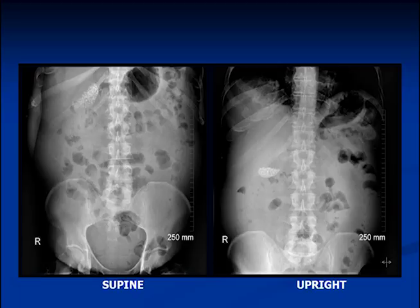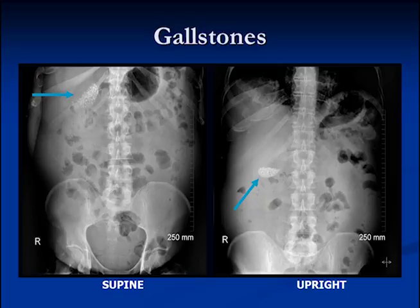There's some calcification in the right upper quadrant on this film — these are gallstones. If we do an upright view, you can see that the stones layer out — they're a little heavier than the bile, so the bile is on top and the stones are on the bottom, and you get what looks like an air-fluid level.